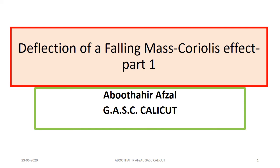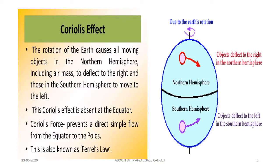Welcome students. Welcome to my lecture on Deflection of a Falling Mass: Coriolis Effect. We have studied the effect of a rotating frame of reference on the motion of a body. The fictitious force involved two terms: one is a centrifugal force and the other is a Coriolis force. Today let us discuss the effect of Coriolis force in detail and see what happens to a body falling from a height towards the earth.